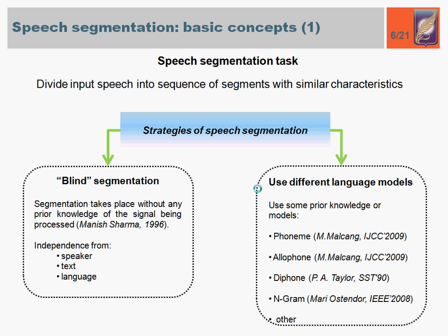The main purpose of speech segmentation is to divide input speech into a sequence of segments with similar characteristics. When conducting speech segmentation we can follow two strategies. The first one is blind segmentation, which happens when segmentation takes place without any prior knowledge of the signal being processed. This strategy provides text, language, and speaker independence.